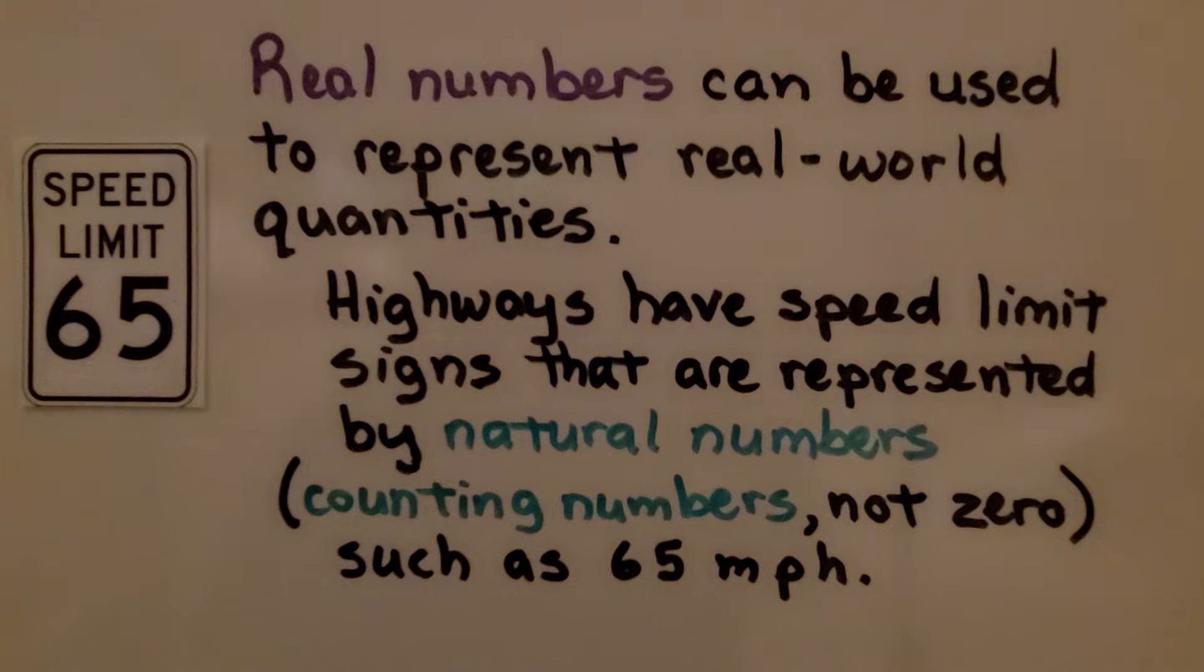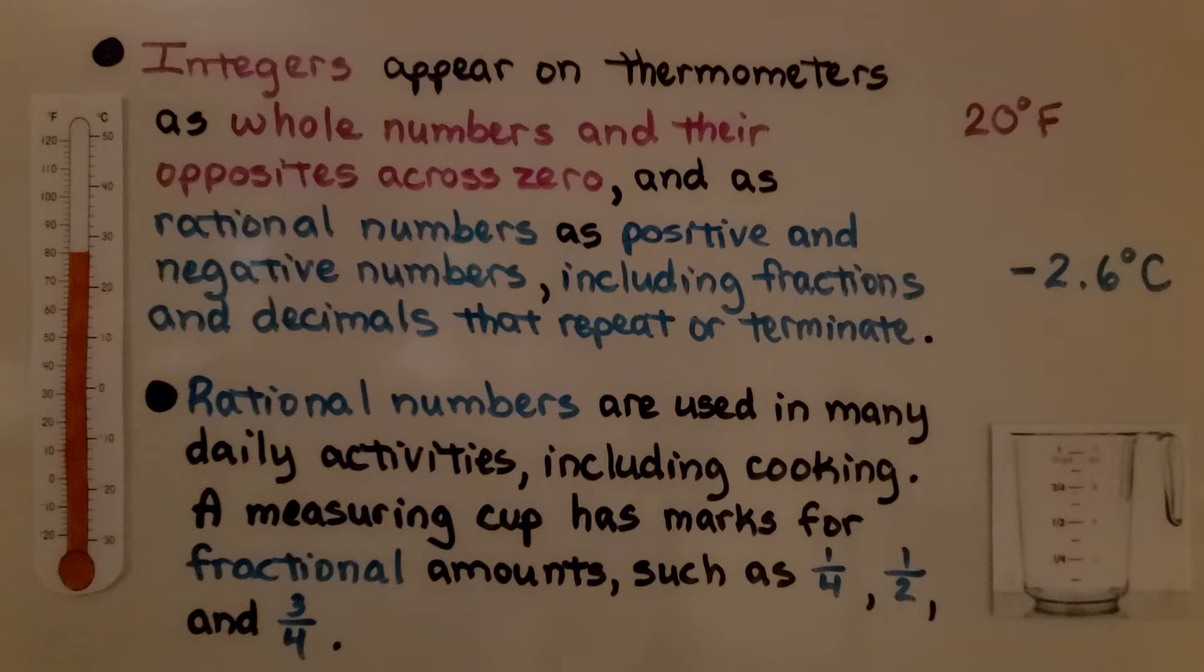Real numbers can be used to represent real-world quantities. Highways have speed limit signs that are represented by natural numbers, counting numbers not zero, such as 65 miles per hour. Integers appear on thermometers as whole numbers and their opposites across zero, and as rational numbers as positive and negative numbers, including fractions and decimals that repeat or terminate. Rational numbers are used in many daily activities, including cooking. A measuring cup has marks for fractional amounts, such as one-fourth, one-half, and three-fourths.